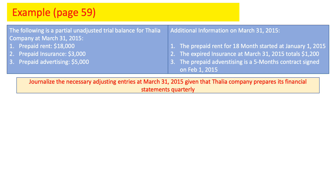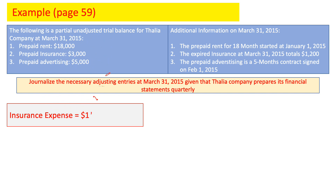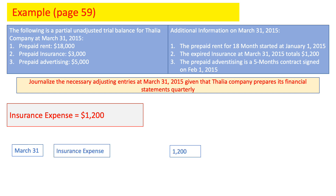Let's do the second one: prepaid insurance. I have prepaid insurance for $3,000. The additional information states that the total expired insurance equals $1,200. So the insurance expense is already given as $1,200. The adjusting entry: debit insurance expense for $1,200, and credit prepaid insurance for $1,200.